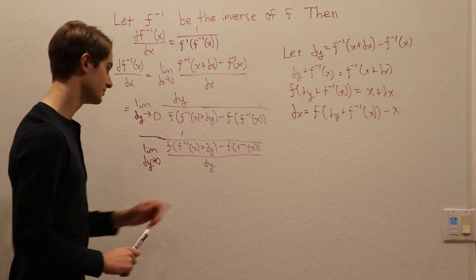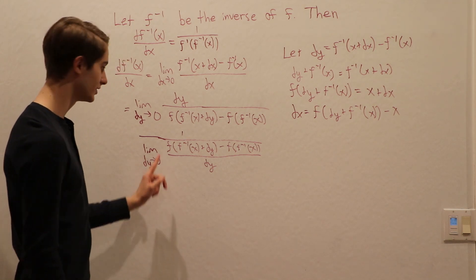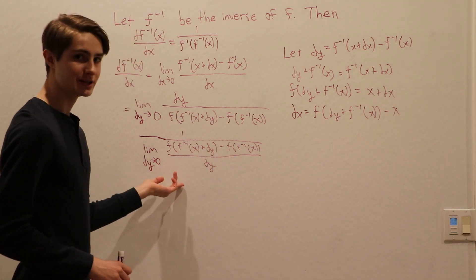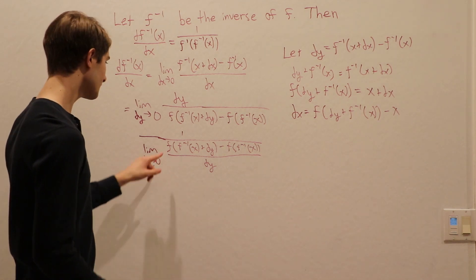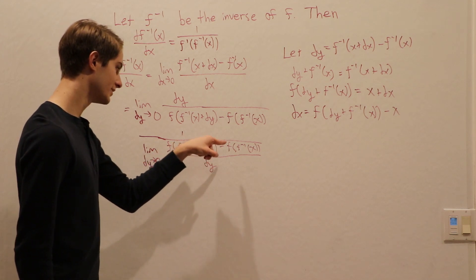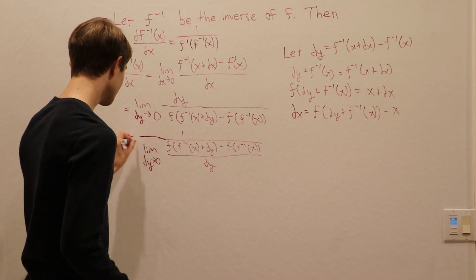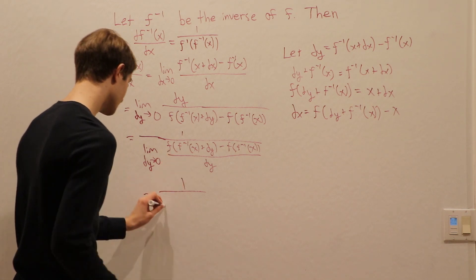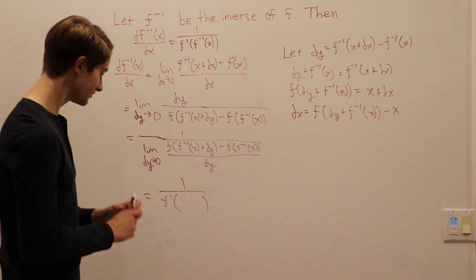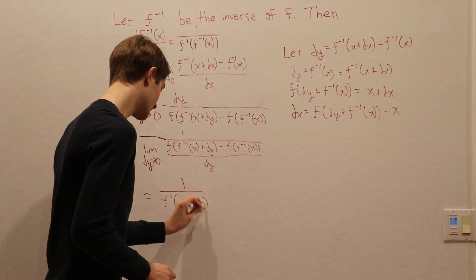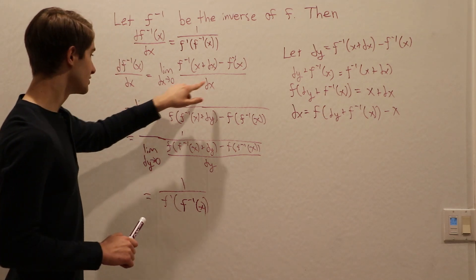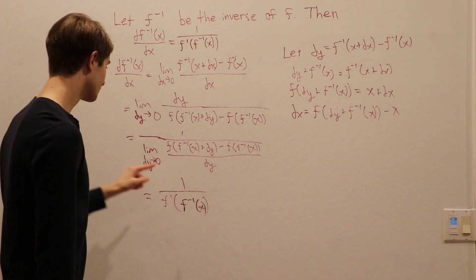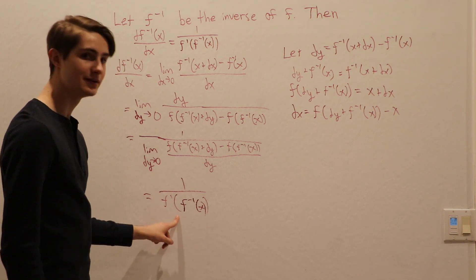Now let's look at the expression on the bottom: the limit as dy approaches 0 of f of f inverse of x plus dy, minus f of f inverse of x, over dy. This is exactly the definition of a derivative — the function of something plus dy, minus the function of something, over dy. So this equals 1 over f prime of f inverse of x. Using the limit definition of the derivative and this substitution, we've proven that the derivative of the inverse function equals 1 over f prime of f inverse of x.